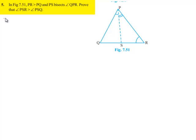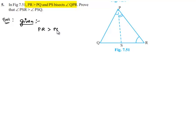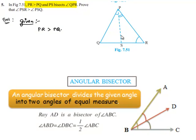Now moving on to the solution. Let us note down the given information: PR is greater than PQ and PS bisects angle QPR. So as PS bisects angle QPR, we can say that angle QPS is equal to angle SPR.